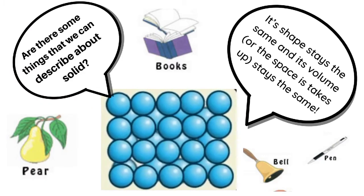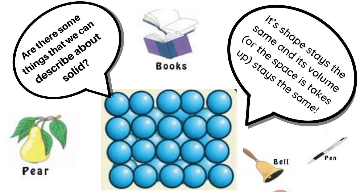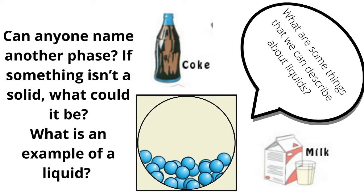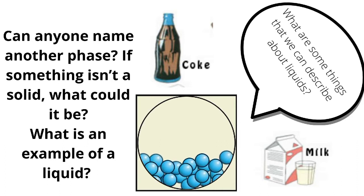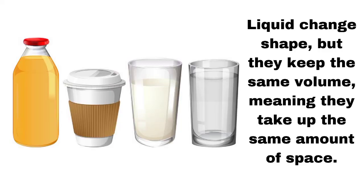What can we describe about solids? The shape of a solid stays the same, and its volume — the space it takes up — stays the same. An example of a liquid: liquids change shape, but they keep the same volume, meaning they take up the same amount of space.